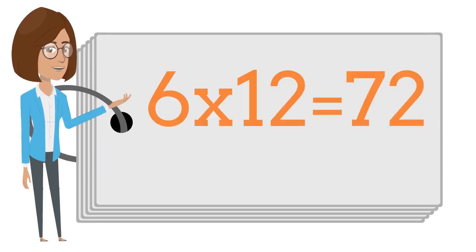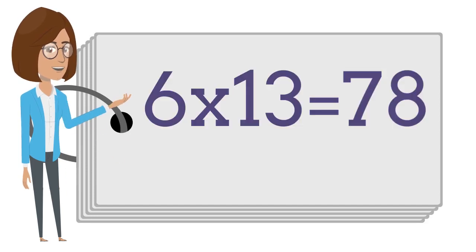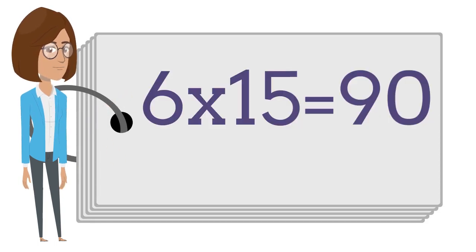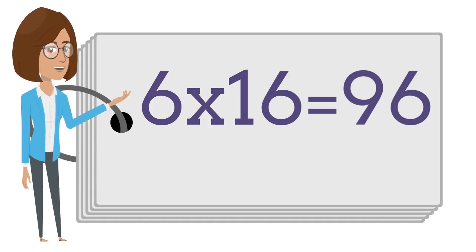Six times twelve is seventy-two. Six times thirteen is seventy-eight. Six times fourteen is eighty-four. Six times fifteen is ninety. Six times sixteen is ninety-six.